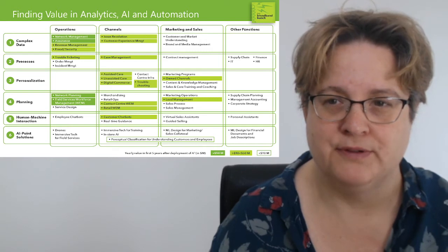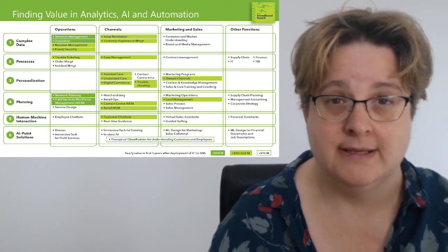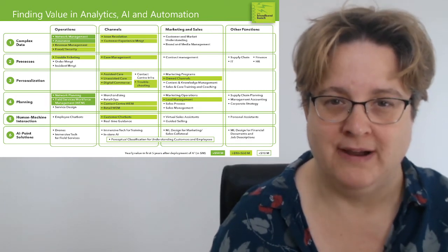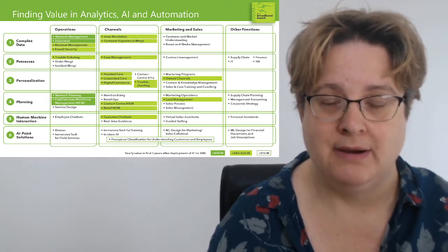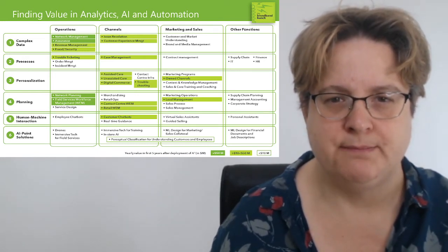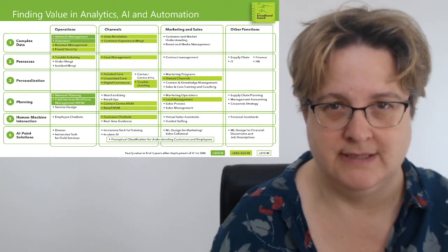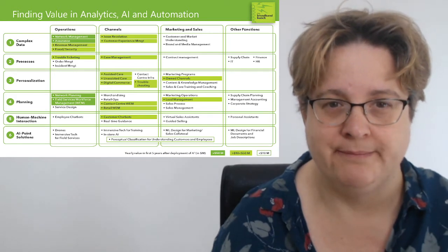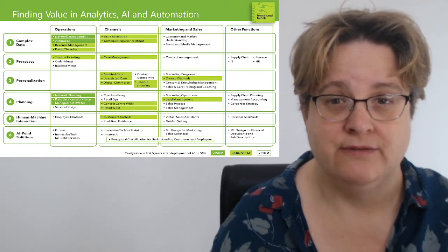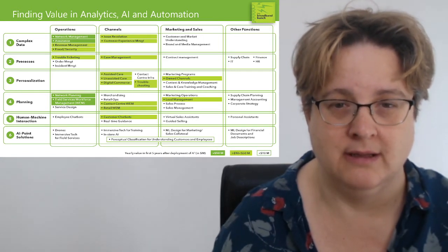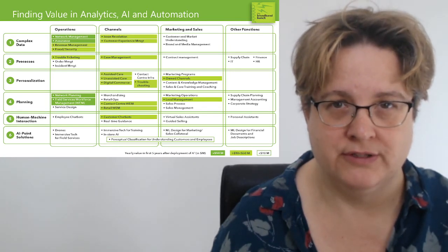Looking at a couple of examples from boxes in row three. Assisted care: machine learning underpins the help provided by contact center agents to customers, thereby reducing average call handling times. Unassisted care: machine learning provides personalized content and customer experiences with modest headcount savings. Troubleshooting: customers and agents using functionality on either the device or in the OSS will be able to diagnose and fix problems using mature analytics with some machine learning, also leading to a reduction in calls to the contact center.